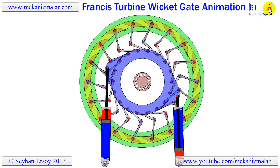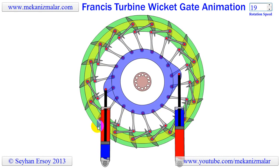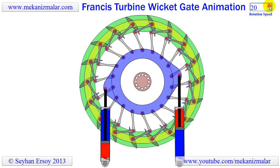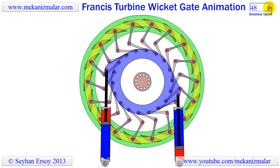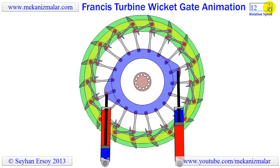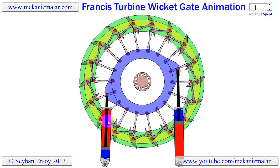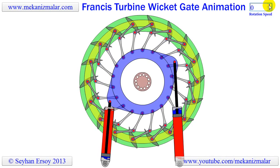The rotation of this disk is controlled by two pairs of hydraulic cylinders, in such a way that when one cylinder is pushing, the other is pulling. Assuming that the red color denotes high-pressure oil and the blue one is low pressure, we can see this pushing and pulling action in the animation.